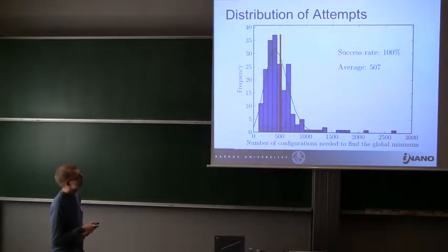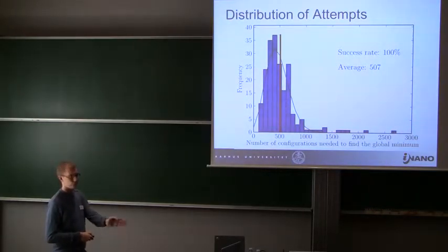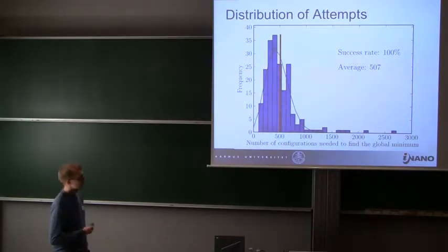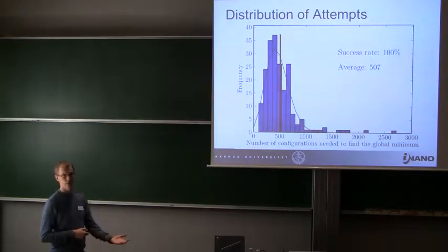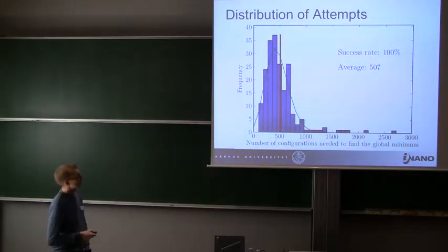We get a histogram like this. The x-axis here is the number of configurations we need to test before we find the global minimum. Up here is the frequency in total 200 attempts. The red line here marks the average number of configurations we need to test before we find the global minimum. You can see there is some spread here. The green line here is a Poisson distribution generated from the average. It seems like it follows more or less the Poisson distribution, which makes sense since finding the global minimum is a rare event. Up here we also report the success rate. That means all runs of the genetic algorithm found the global minimum within a limit of maximum testing 3,000 configurations. In this case, this is the default parameters of the method. It has a success rate of 100% and an average number of structures of 500.